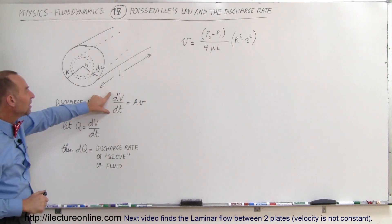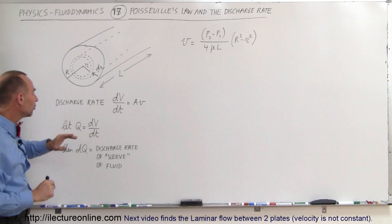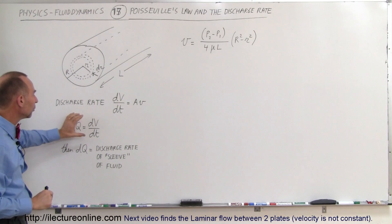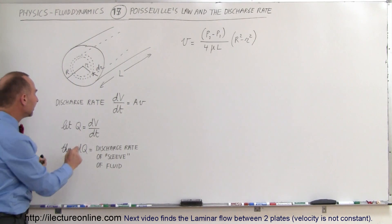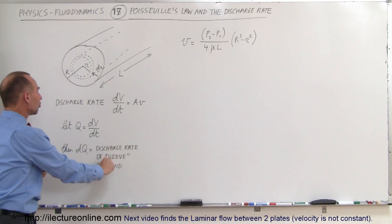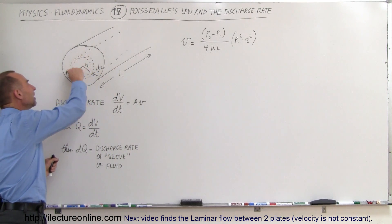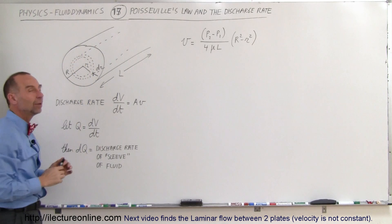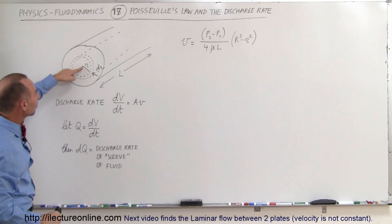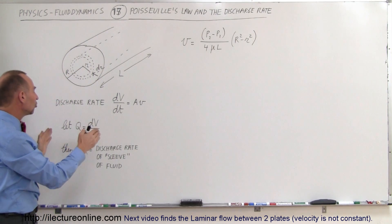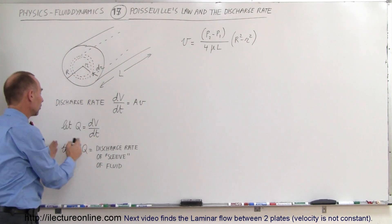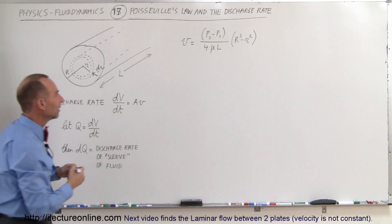Since we already have a dv dt, we don't want that in our equation. We're going to let q represent the discharge rate, dv dt. So then dq is going to be the discharge rate of just a small little sleeve of fluid coming through the pipe, and the sleeve is positioned at a distance r away from the pipe, and it has a thickness of dr, and it's the discharge rate of that sleeve we're going to call dq.